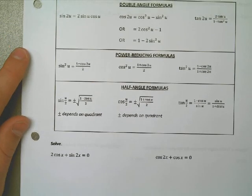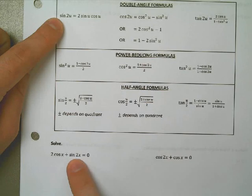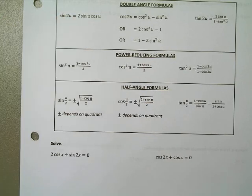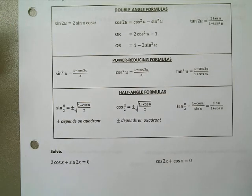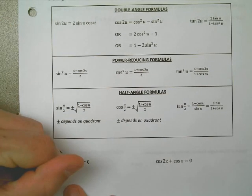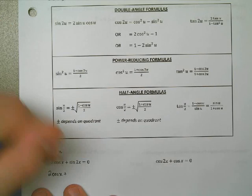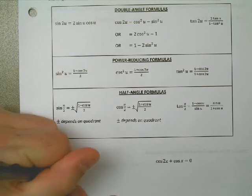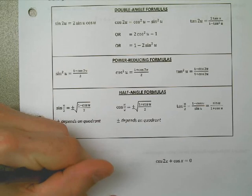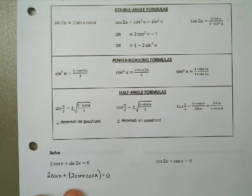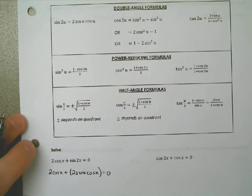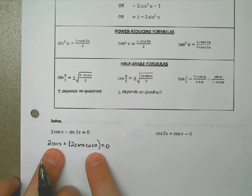So what we need to do is rely on these formulas that we have up here, that would be the sine of 2u. Instead of x, I'm using u. The sine of 2u is 2 sine u cosine u. So what I'm going to do here is, knowing that the double angle formula is such, I need to rewrite the equation as 2 cosine x plus, and then I'm going to replace sine of 2x with this up here, the 2 sine cosine.